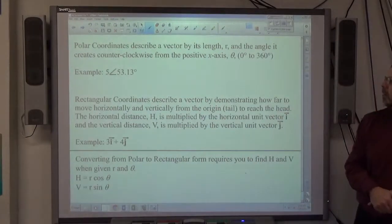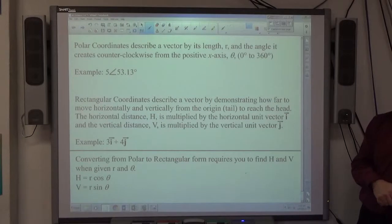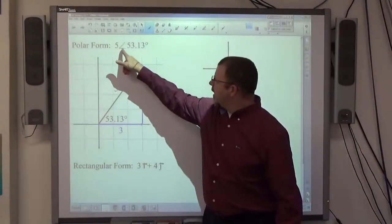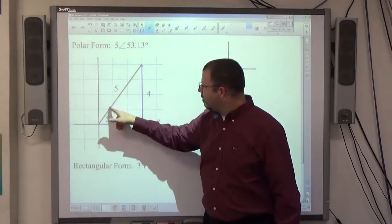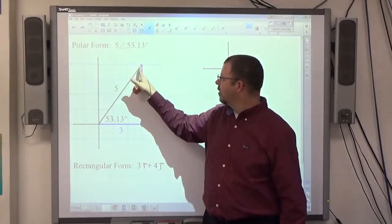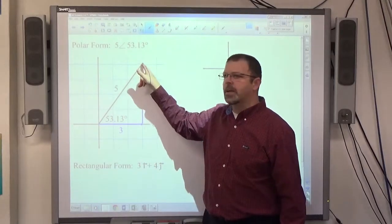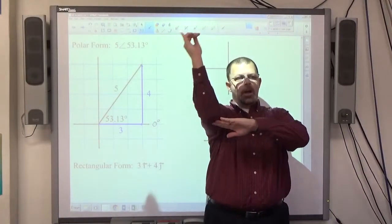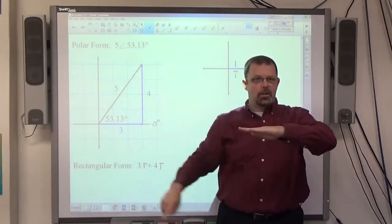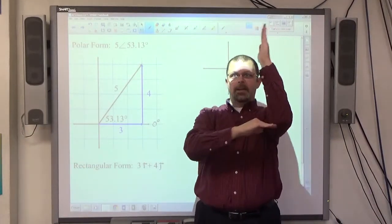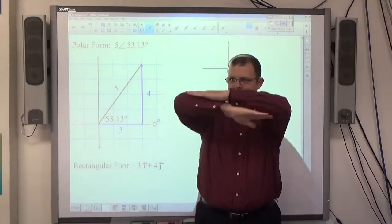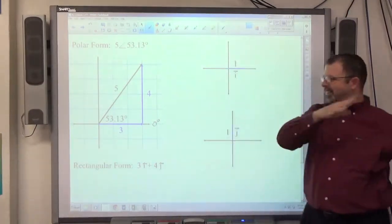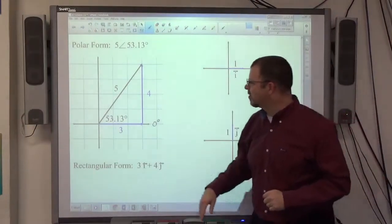Polar coordinates describe a vector by length r and angle it creates counterclockwise from the positive x-axis. What this means, using real language here, 5 at an angle of 53.13 degrees means that the vector length is 5. This little arrow, this half arrow means it's not going on forever, it just stops right there.